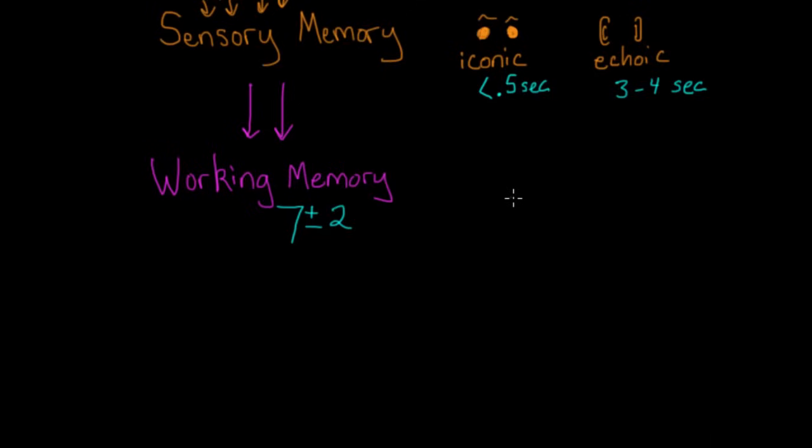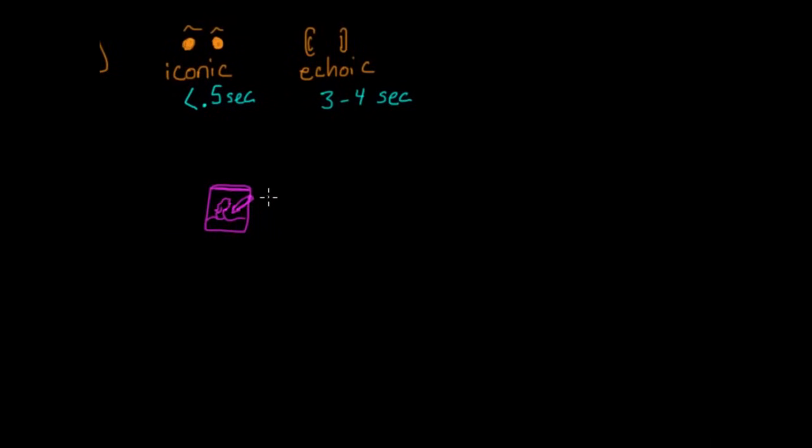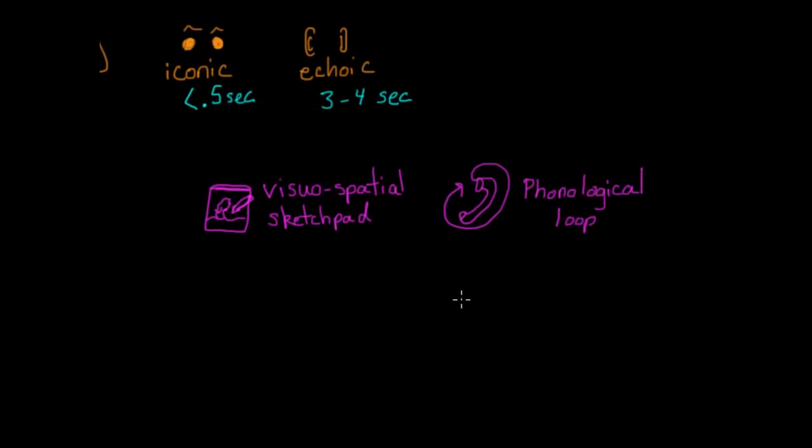And just like sensory memory has different components for different types of input, working memory has different components to process those distinct types of input. Visual and spatial information, like pictures and maps, are processed in the aptly named visuospatial sketch pad, while verbal information, meaning words and numbers, are processed in the phonological loop. Again, think of repeating a phone number to yourself just long enough to type it in. That's using your phonological loop.